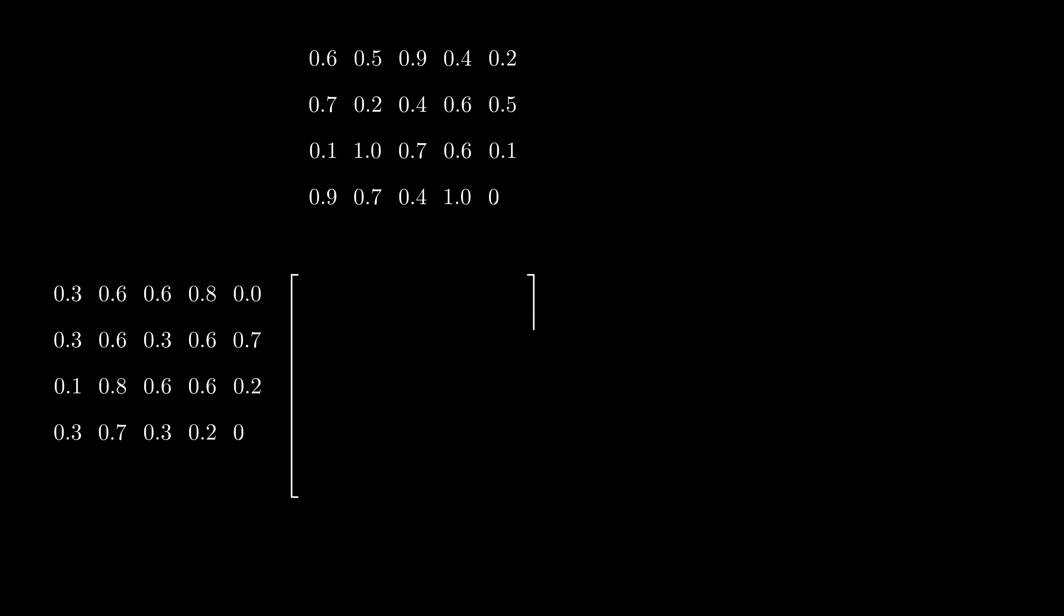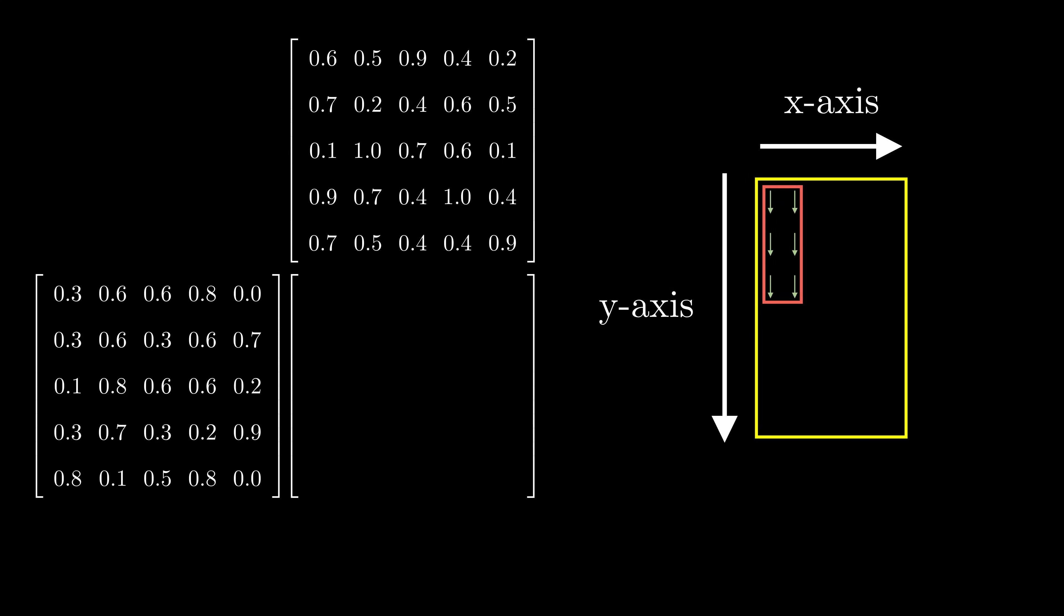Let's now look at matrix multiplication in detail. Consider a simple 5x5 matrix multiplication. To solve this problem, I generate a grid with blocks with three threads on the y-axis and two on the x-axis. I will need three blocks along the x-axis and two along the y-axis to cover all the output elements.